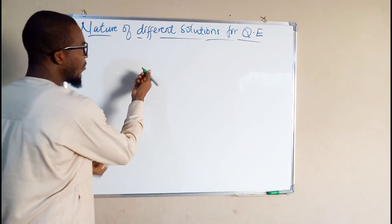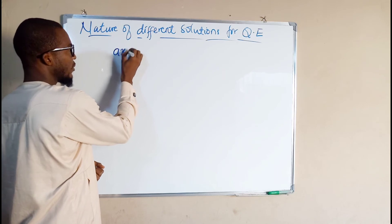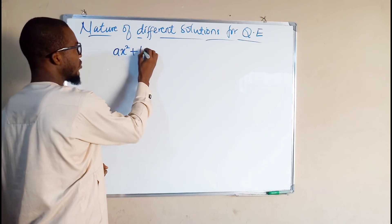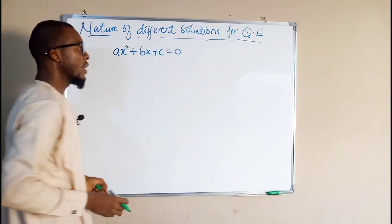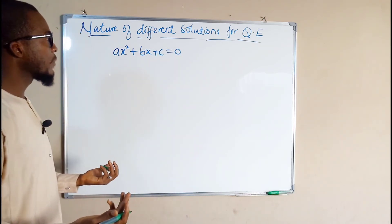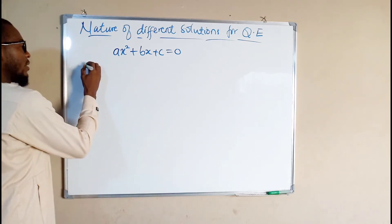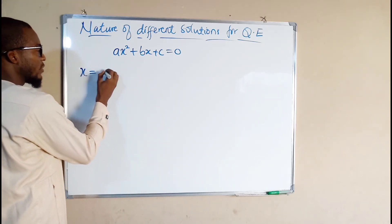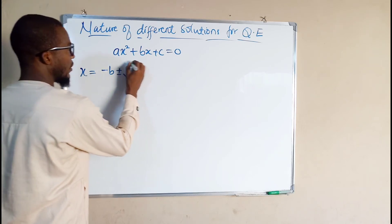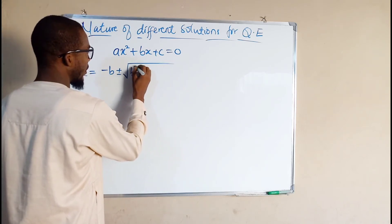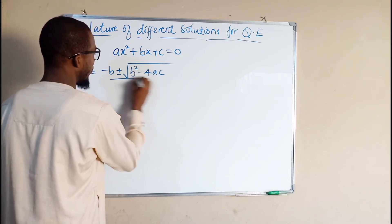The general form of any quadratic equation is given as ax squared plus bx plus c equals zero. And if you could remember, the formula used in solving such an equation is x equals minus b plus or minus the square root of b squared minus 4ac, all divided by 2a.